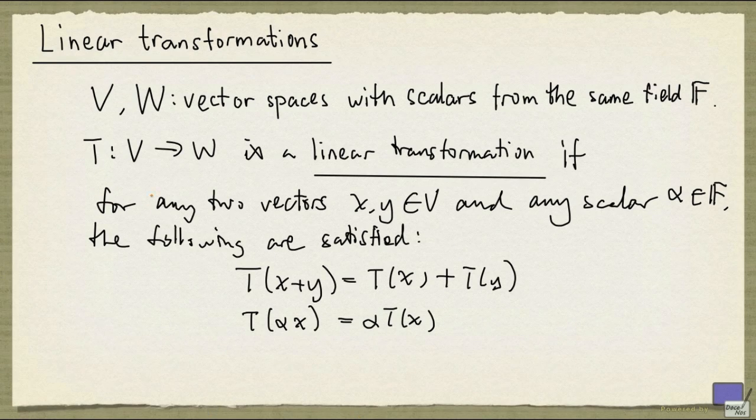Recall that the definition of a linear transformation is as follows. Say V and W are vector spaces with scalars from the same field F. T is a mapping from V to W satisfying these two properties.